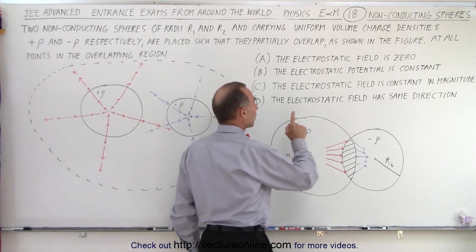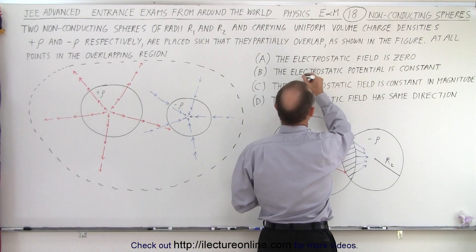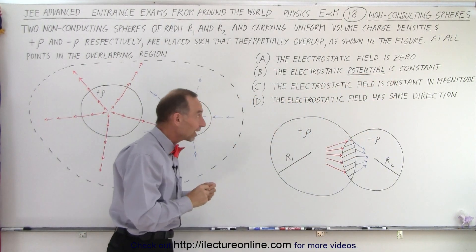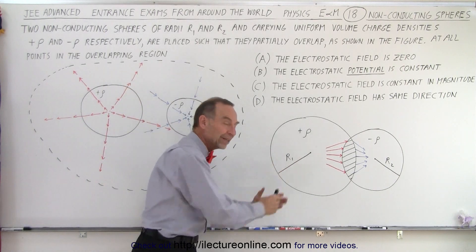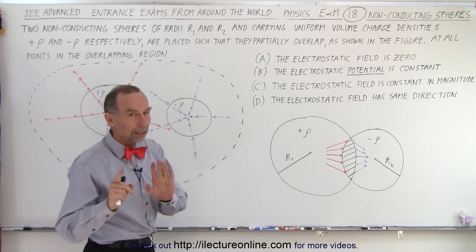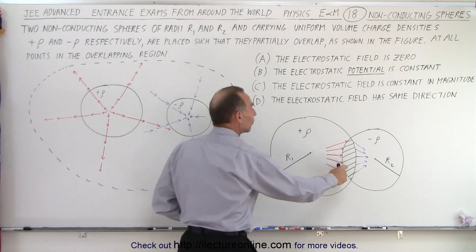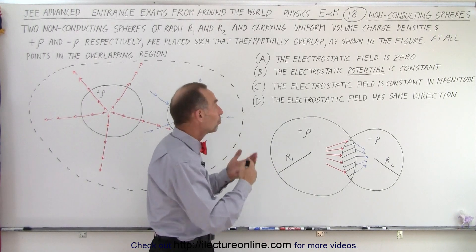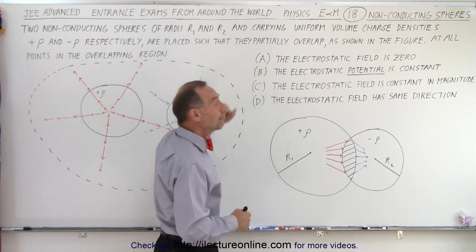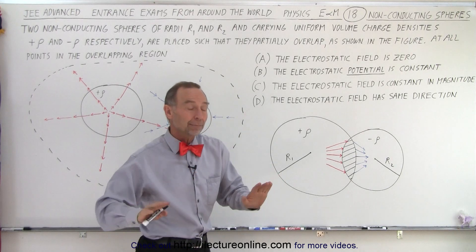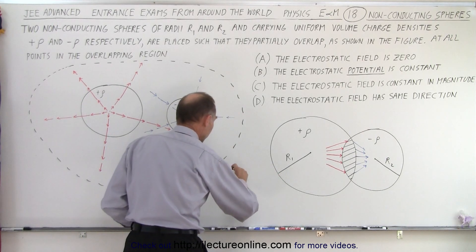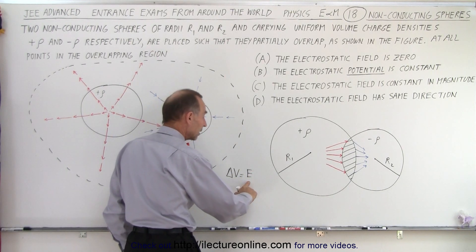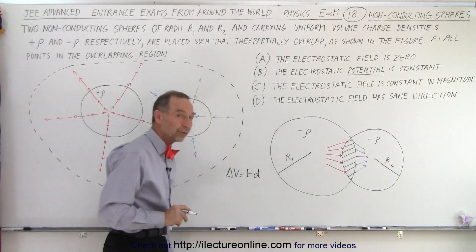Secondly, they throw in something that you have to be very careful about. Now they talk about the electrostatic potential, not the field. They start talking about the electrostatic potential and claim that it's constant inside that region. Now, it would only be constant if A was correct. If there's no field inside that region, then B would also be correct. So if A is correct, then B is correct. If A is not correct, then B cannot be correct.